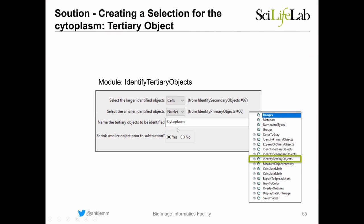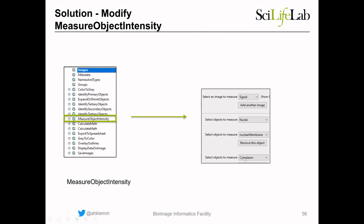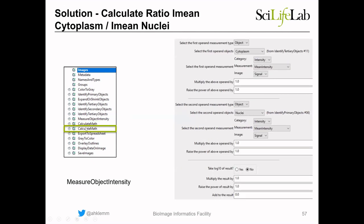To get the cytoplasm outline only, I add another Identify Tertiary Objects module after Identify Secondary Objects: the larger objects are the cells, the smaller objects to subtract are the nuclei, and the output is the cytoplasm. I then add the cytoplasm to the Measure Object Intensity module and add a second Calculate Math module to compute the ratio between cytoplasm and nuclei intensities — to see whether the signal is more in the cytoplasm or in the nucleus.